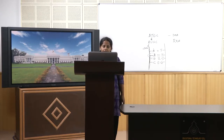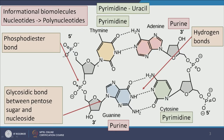In this figure, you can see thymine attached to the phosphate-sugar backbone, and it is attached to another guanine molecule that is also attached to a backbone of nucleic acid. These two are attached to each other with a phosphodiester bond. Because there is a thymine here, it has a double bond with adenine, and guanine has a triple hydrogen bond with cytosine — G with C, A with T — and these nucleotides are attached to each other by a phosphodiester bond.